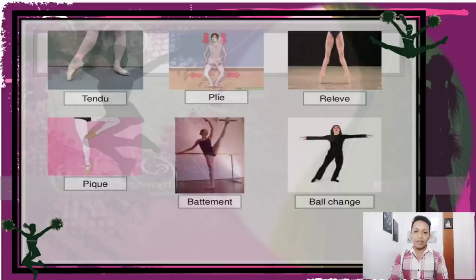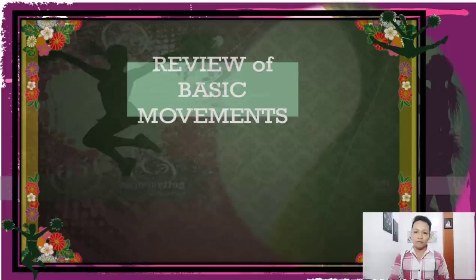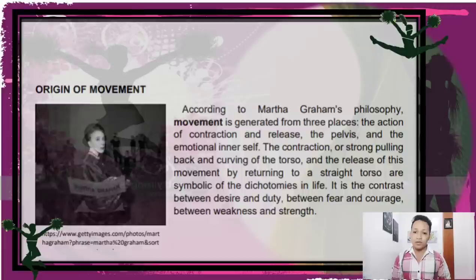Now let's proceed to contemporary dancing. Contemporary dance is an expressive dance technique combining a variety of dances — modern, jazz, lyrical, and classical ballet. It is a performing art involving rhythmic body movement within a given space choreographed based on a musical beat, developed in the 1950s in America and Europe. According to Martha Graham's philosophy, movement is generated from three places: the action of contraction and release, the pelvis, and the emotional inner self. Contraction — the strong pulling back and curving of the torso — and its release are symbolic of the dichotomies in life: desire and duty, fear and courage, weakness and strength.